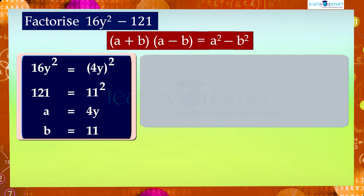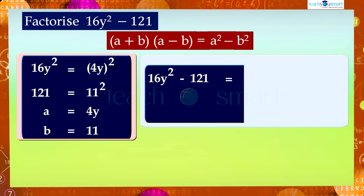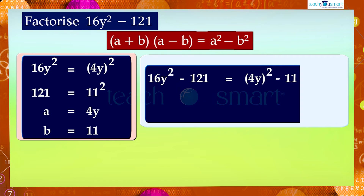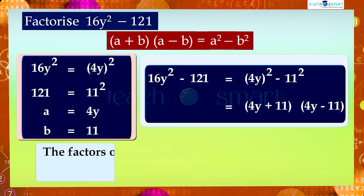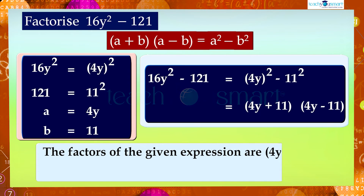Therefore, 16y square minus 121 can be expressed as (4y)² minus 11², which is equal to 4y plus 11 multiplied by 4y minus 11. Therefore, the factors of the given expression are 4y plus 11 and 4y minus 11.